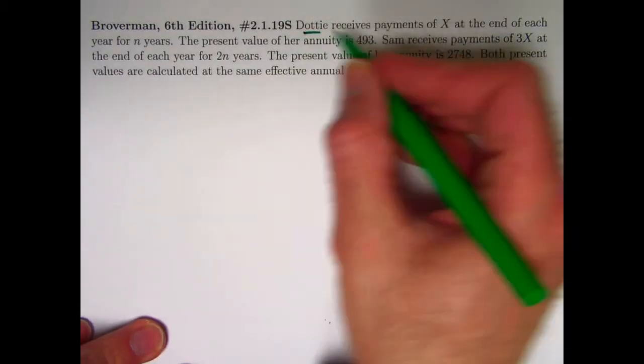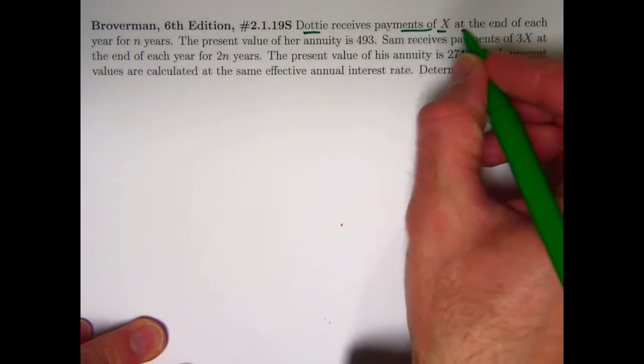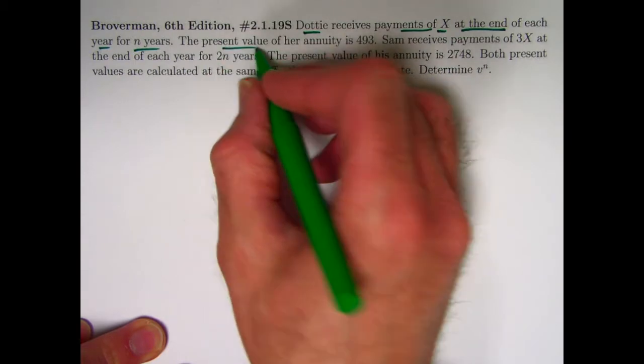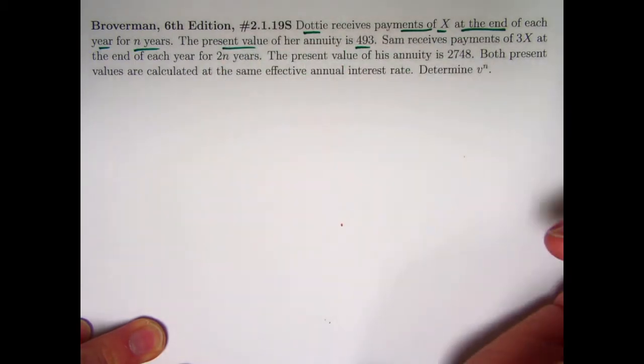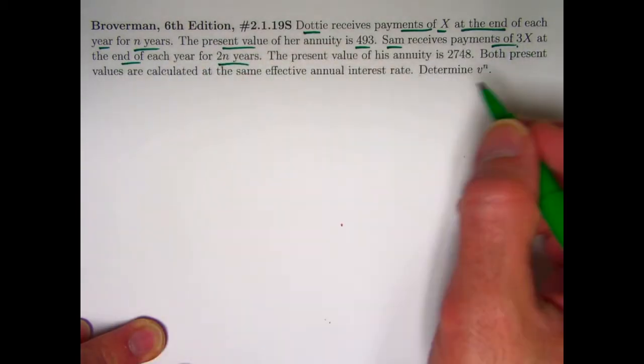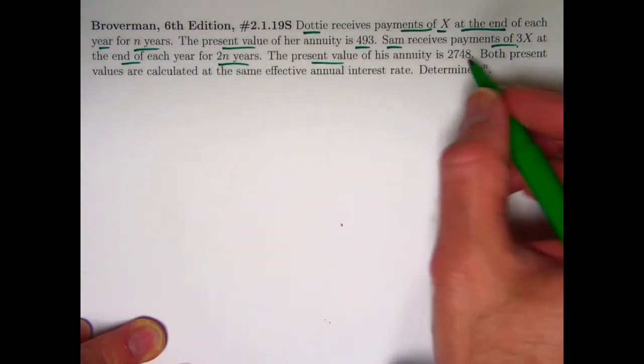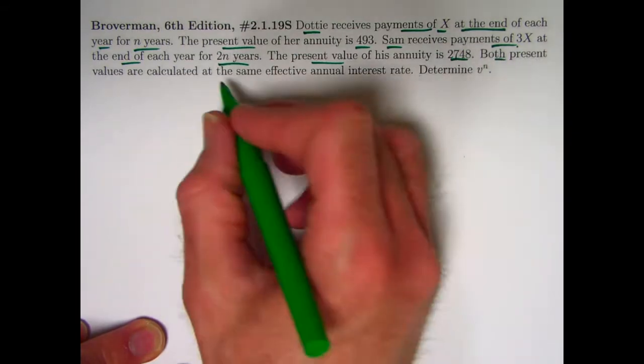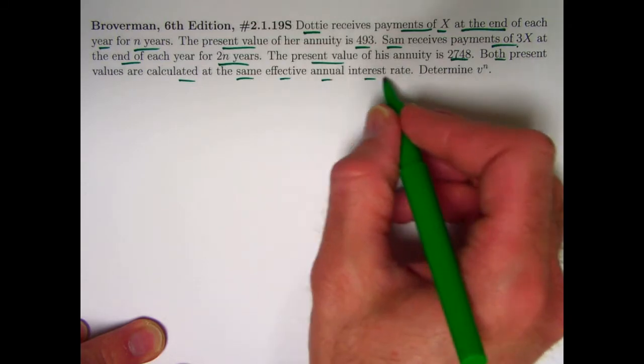Dottie receives payments of x at the end of each year for n years. The present value of her annuity is 493. Sam, on the other hand, receives payments of 3x at the end of each year for 2n years. The present value of his annuity is 2748. Both present values are calculated at the same effective annual interest rate, i.